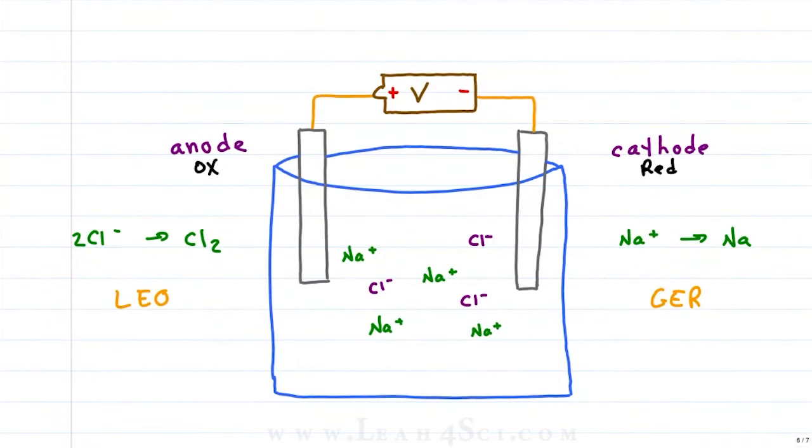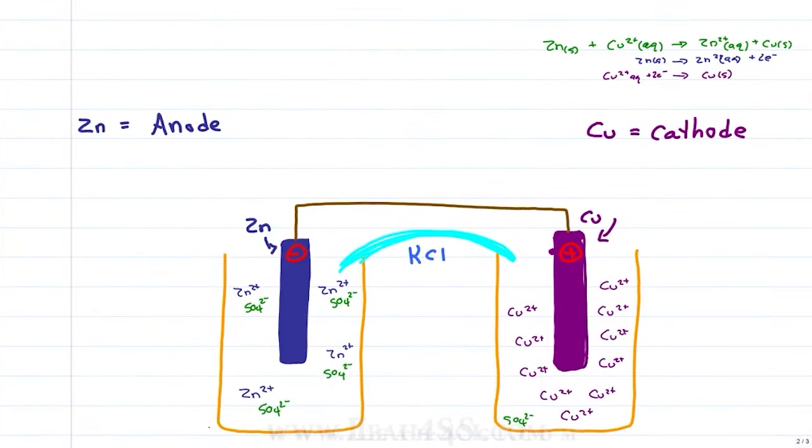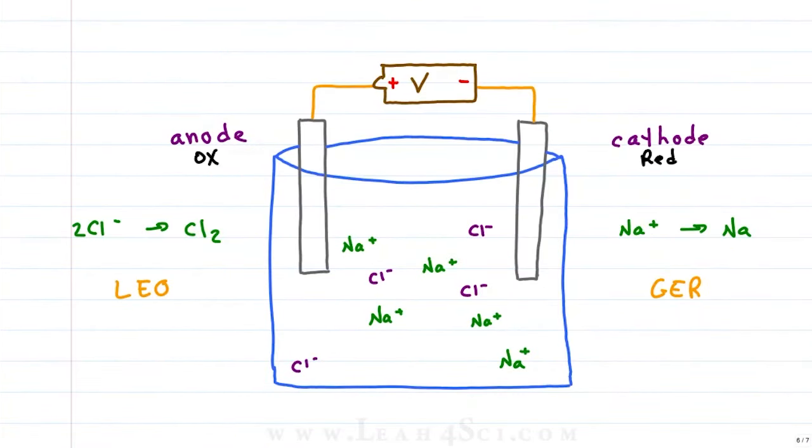Notice how there's no salt bridge. In the galvanic or voltaic cell, we had a salt bridge that sent ions into each half cell to balance the changing charge or to prevent the accumulation of charge. But in this case, because everything is happening in one single container, we have no separation of charge and no need for a salt bridge.